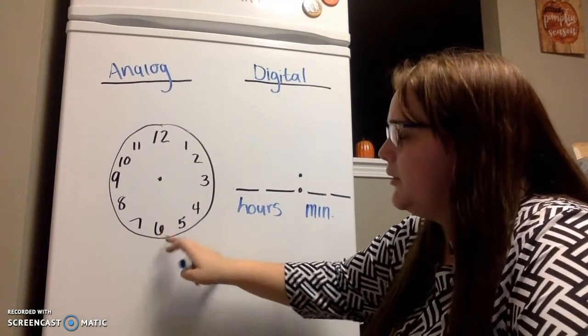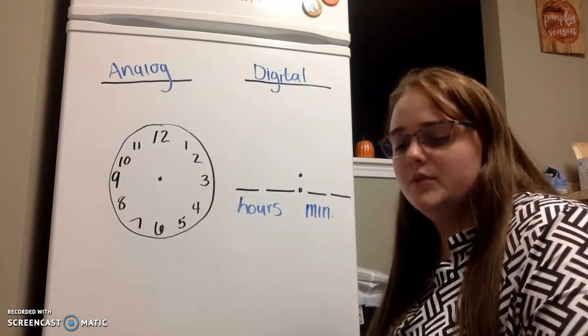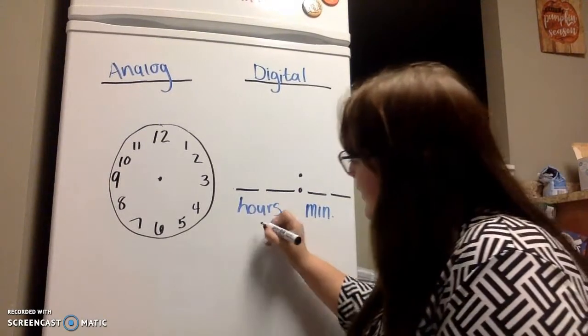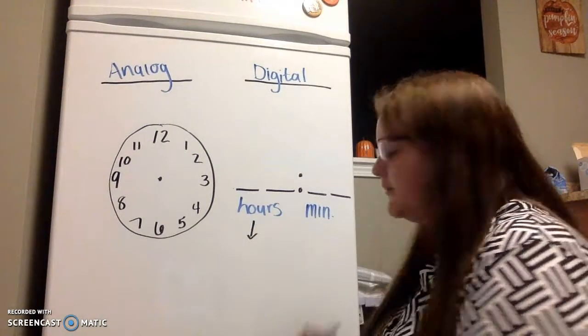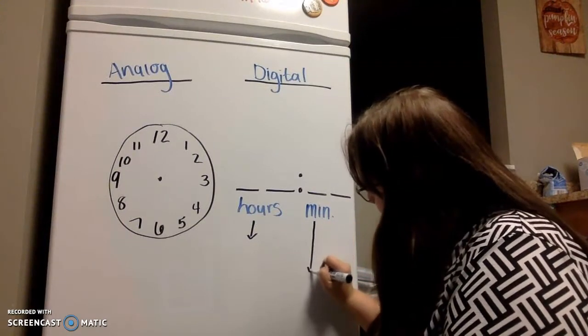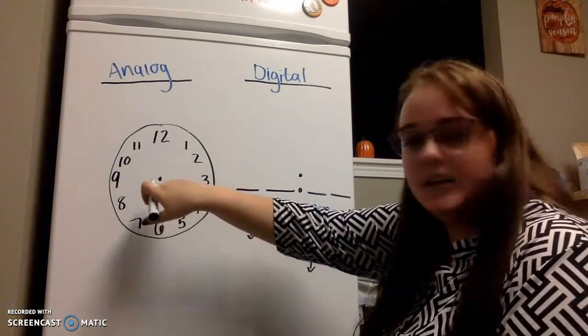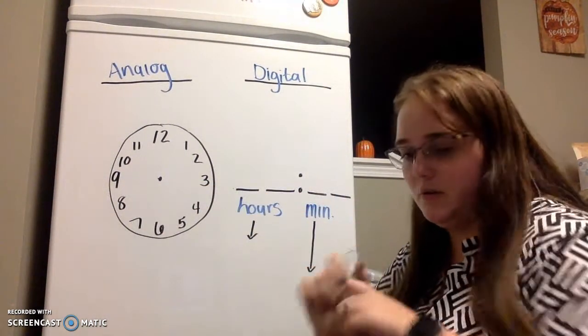So when we do our analog clock, which one is our hour hand? Is our hour hand the long or the short one? Our hour hand is our short arrow. Which means our minute hand is our long arrow. So this is going to help us learn how to read it like this and put it into this or vice versa. Go both ways.